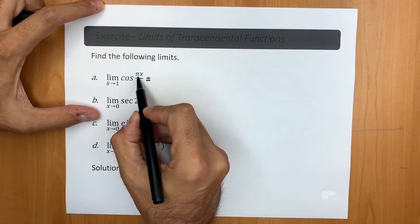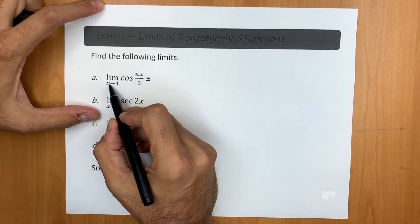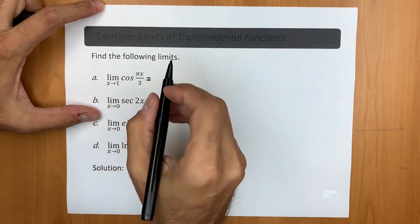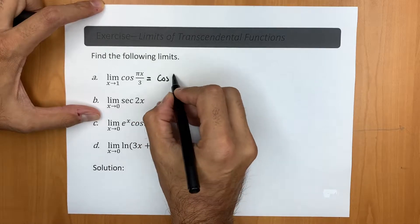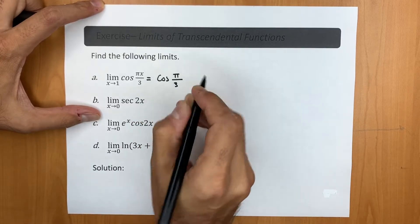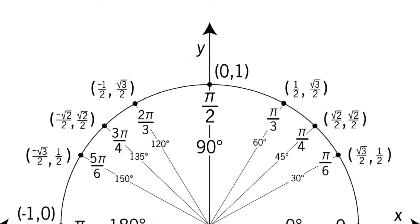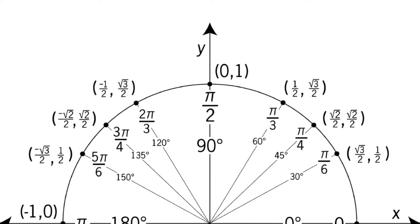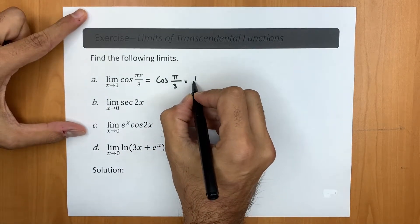Going back to the exercises, let's look at the first one. We have the limit of cosine(π/x / 3) as x approaches 1. Let's substitute 1 for x, so we get cosine(π/3). Using the unit circle or a calculator, cosine(π/3) is just one-half.